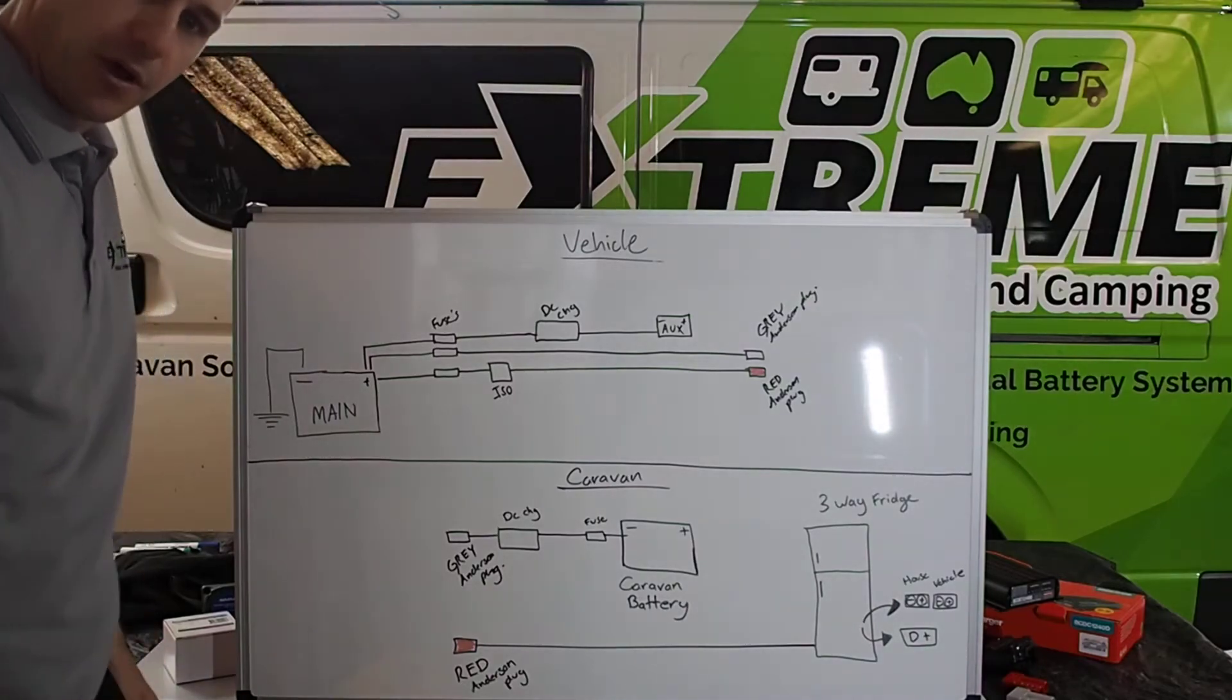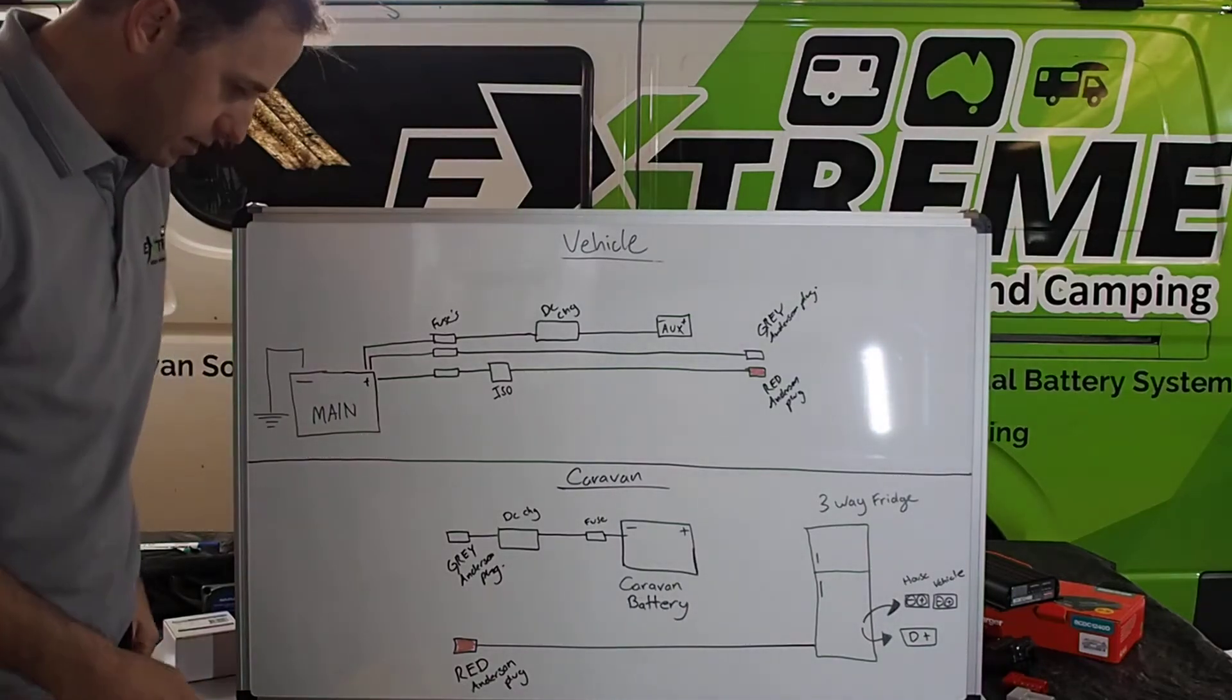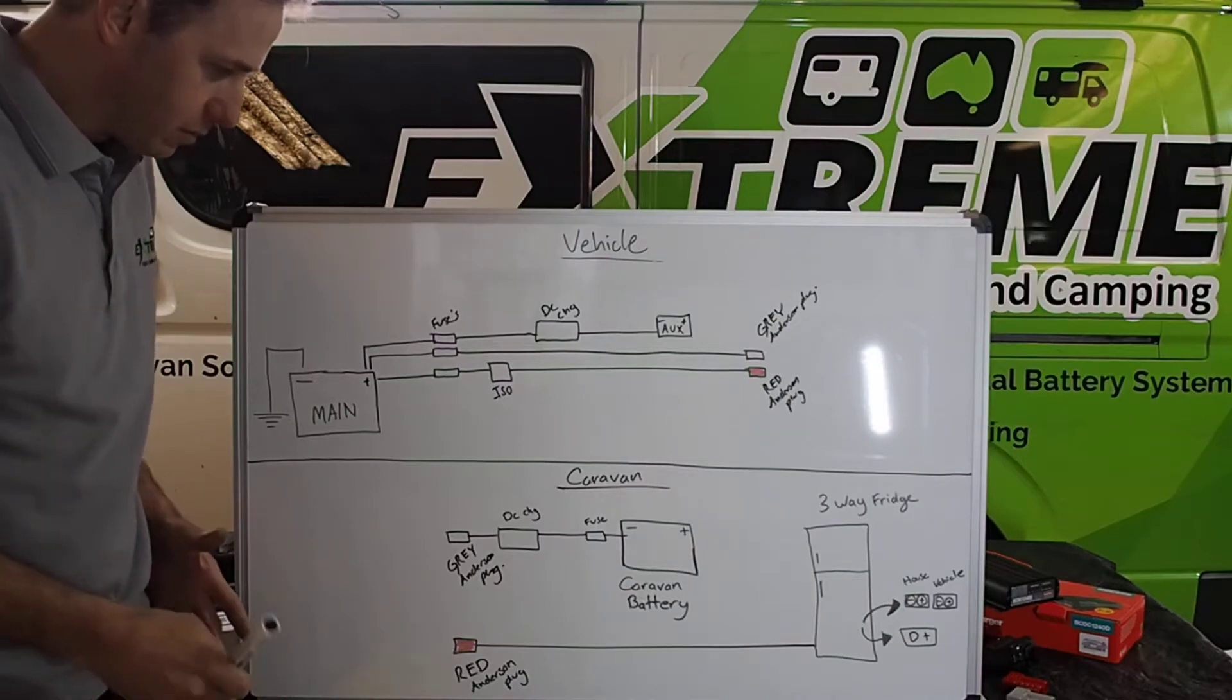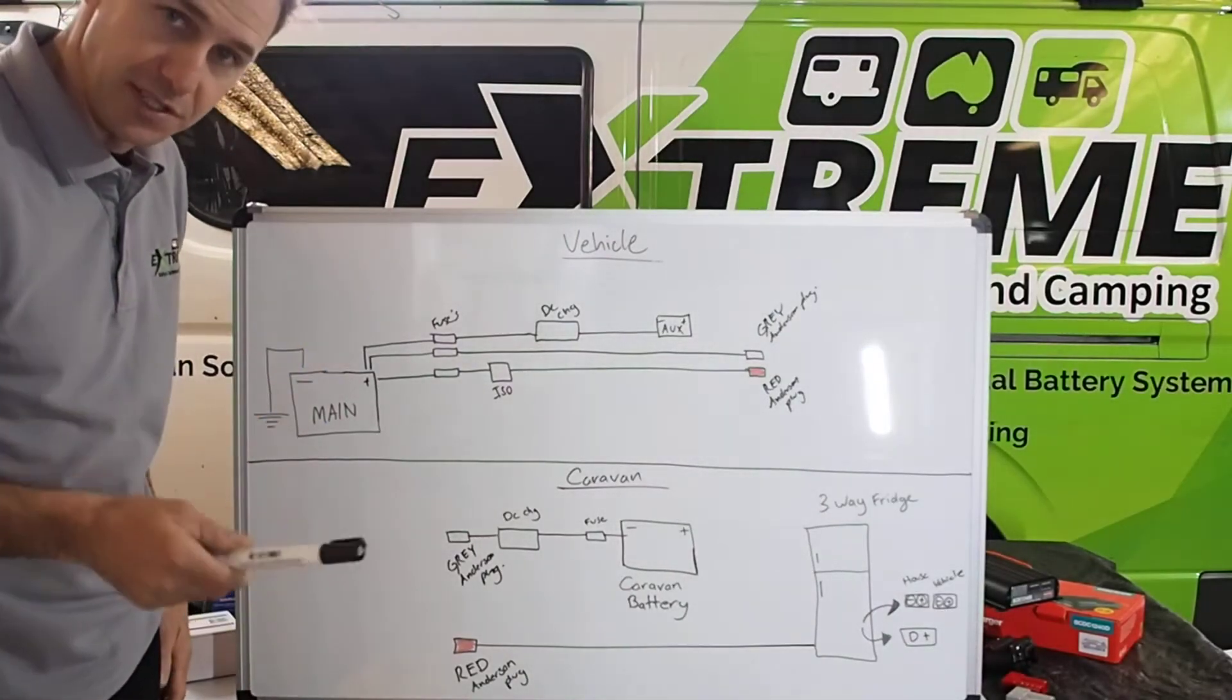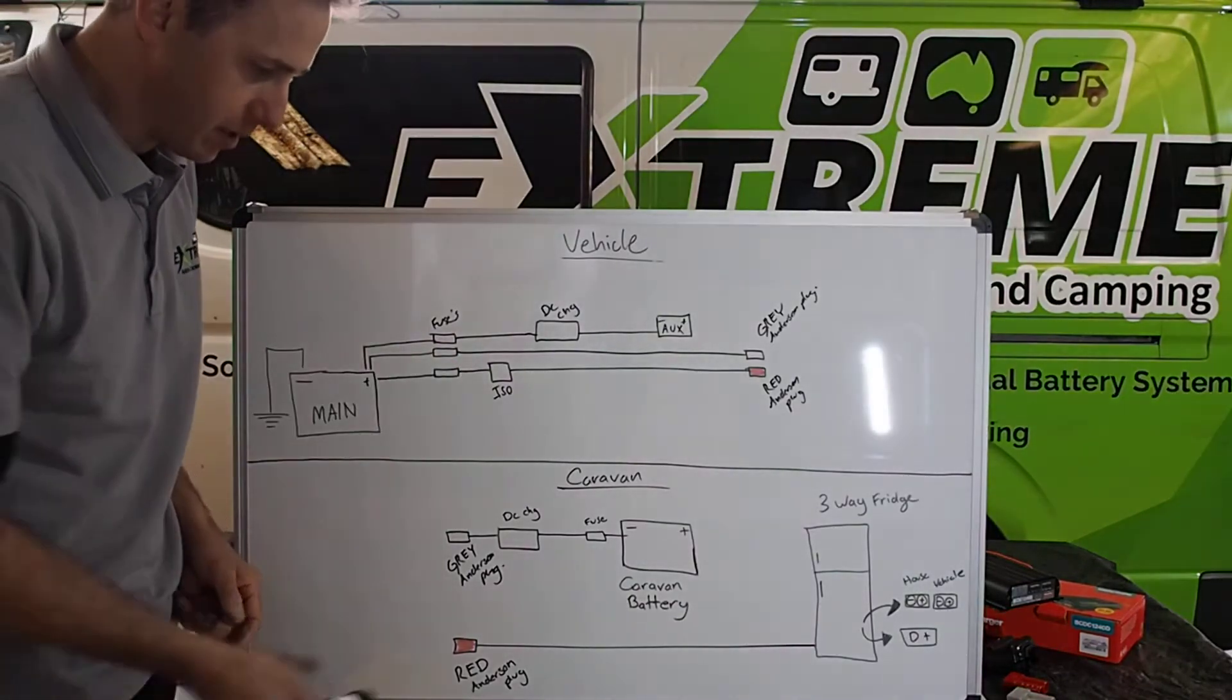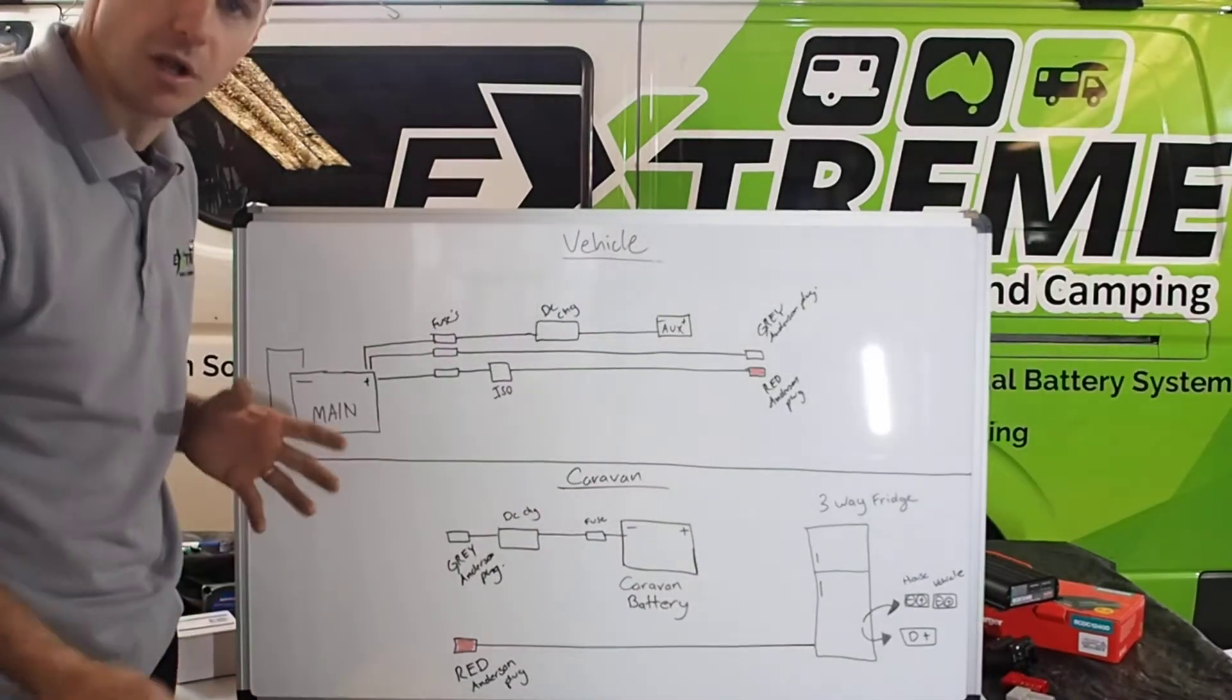G'day guys, it's Matt from Extreme Auto to Caravan Chem here. Part three is what I call the ultimate setup. This is incorporating two DC chargers, a three-way fridge, an auxiliary battery and a caravan battery, the system all tied into one.